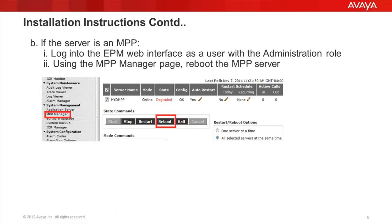Once the EPM server reboots and comes back up, we can log into the EPM web page and then proceed with the reboot of the MPP server, once the RPM is also installed on the MPP servers. Under System Management, when we click the MPP Manager link, we'll have the option to reboot the MPP from the web page. We select the MPP server we want to reboot and click the Reboot button, which completes the RPM installation on both the EPM and MPP servers.